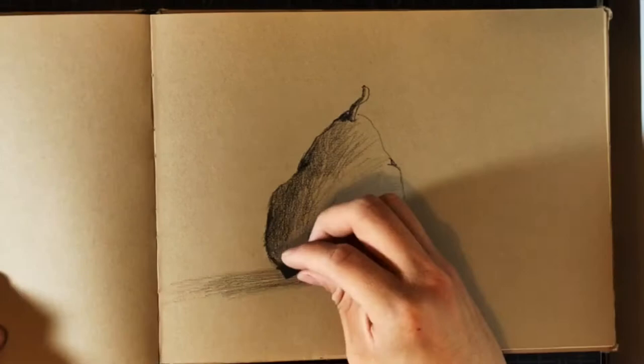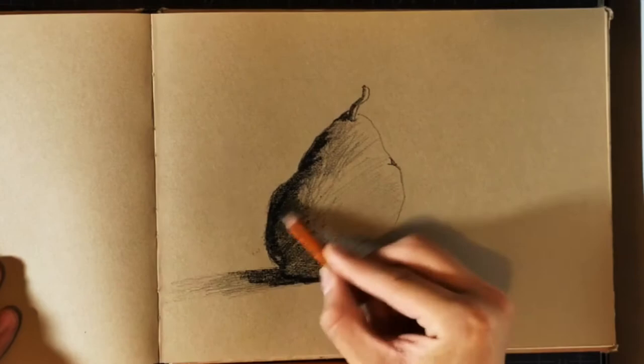Now that I got the light shadows done, I will use a compressed charcoal to darken them. Then I will use a 4B charcoal pencil to help it blend throughout the pear.